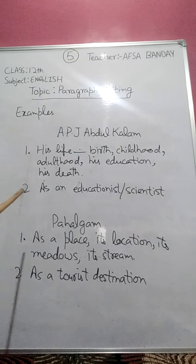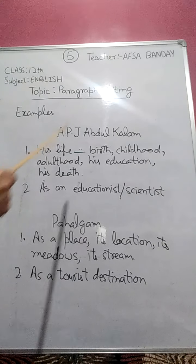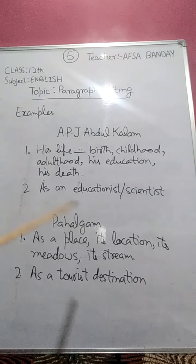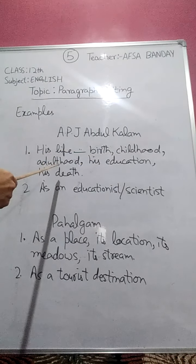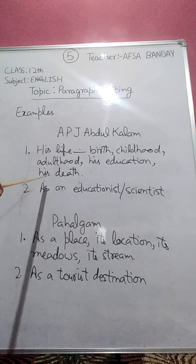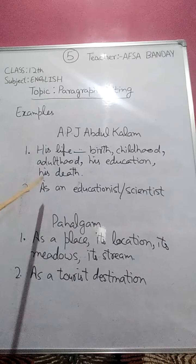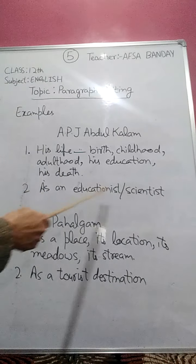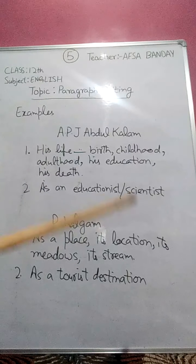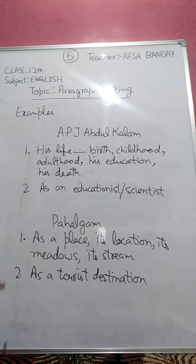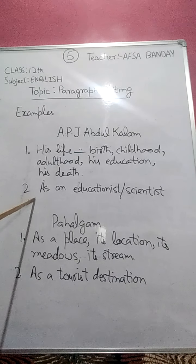Let us have some examples. Suppose you are supposed to write a paragraph on APJ Abdul Kalam. You have two main ideas: one is to describe his life — where you can include his birth, childhood, adulthood, parents, education, and death. Or you can write the main idea as APJ Abdul Kalam as an educationist or as a scientist, describing his contributions towards education and science, as he was one of the greatest scientists of our country. It's up to you whether you choose his life or his contributions as the main idea of your paragraph.